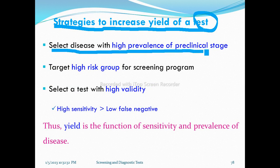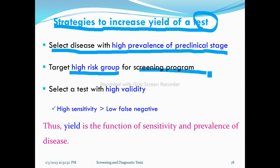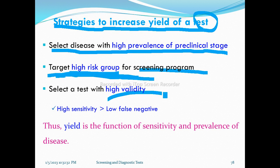To improve cost effectiveness: select a disease with high prevalence at the preclinical stage, target high-risk groups for the screening program, and use tests with high validity — meaning high sensitivity and low false negatives.